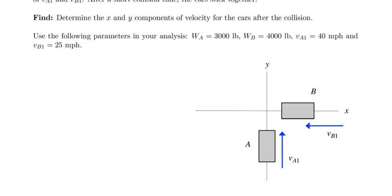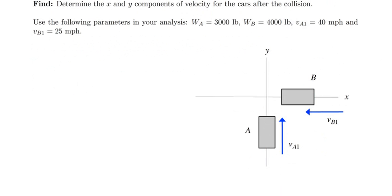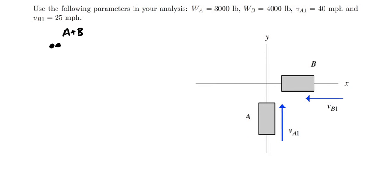Looking at this from the top down, if we draw a free body diagram of the system A plus B, there are no forces acting on the system. As a result, linear momentum is conserved in every direction. I'm going to apply linear impulse momentum in the x and y directions respectively, as defined on the right-hand side.